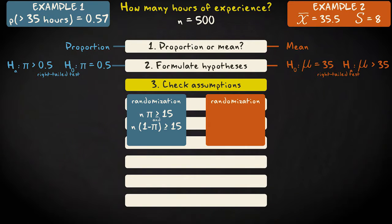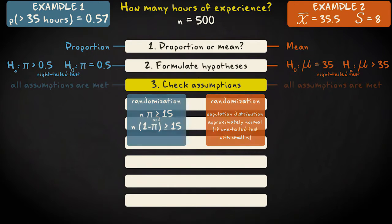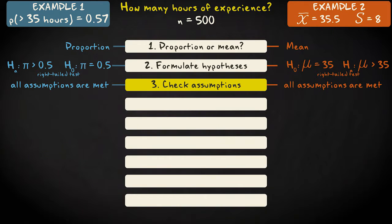If you're dealing with a mean, your population distribution should be approximately normal. However, in practice, this is only of importance if your sample size is small and you do a one-tailed test. Regarding our example, all assumptions are met: we have a simple random sample, our n is large enough, and the sample distribution of hours of diving experience is approximately normal.